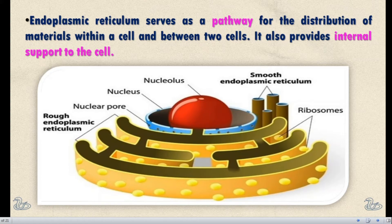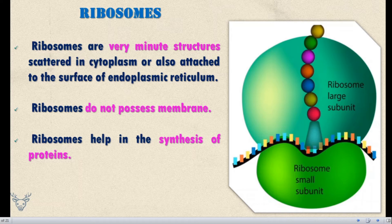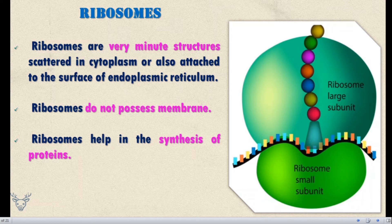Next, Ribosomes. Ribosomes are very small, minor structures that are scattered in the cytoplasm or attached to the surface of the Endoplasmic Reticulum. Ribosomes do not possess a membrane — they are not covered by a membrane. The main function of ribosomes is the synthesis of protein.